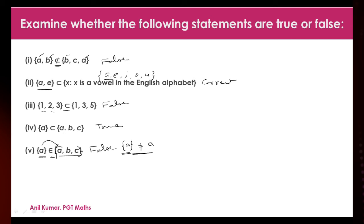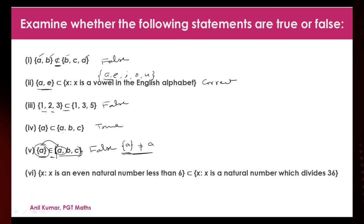Here on the left we have element A and on the left-hand side we have set A. For x being an even natural number less than 6: the even natural numbers less than 6 are 2 and 4. And x being a natural number which divides 36: the divisors of 36 are 1, 2, 3, 4, 6, 9, 12, 18, and 36. Since 2 and 4 are available there, yes — it's a correct, true statement.